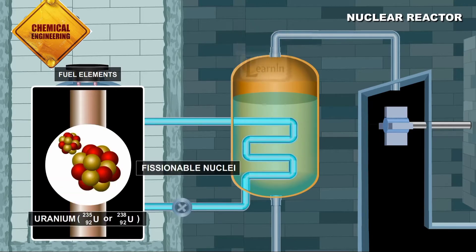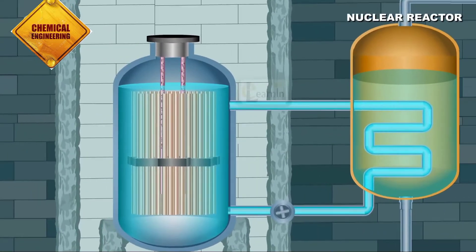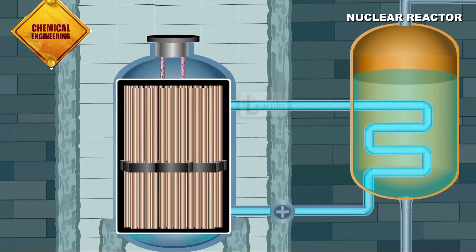These rods vary in number according to the size of the reactor. In large power reactors, thousands of fuel elements are placed close to each other. This region where these fuel elements are placed is called the reactor core.